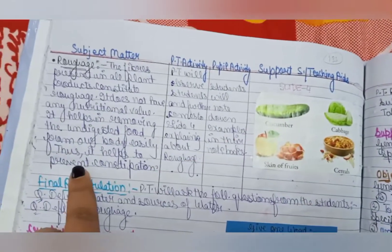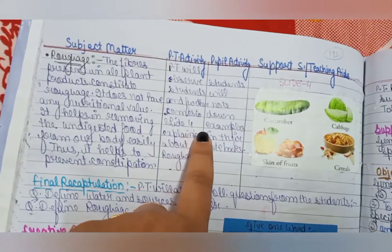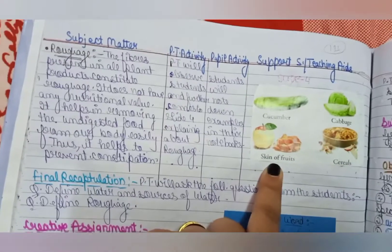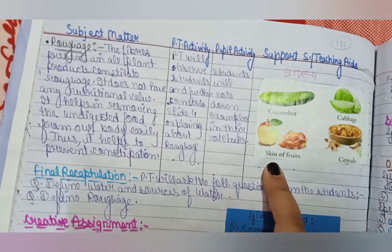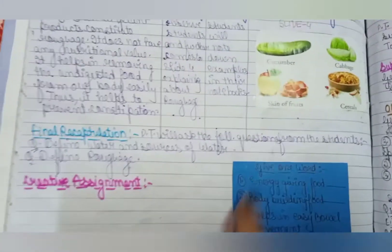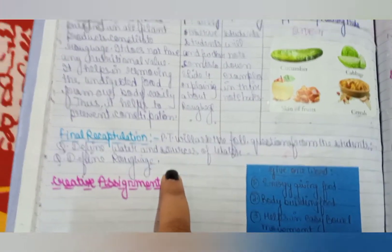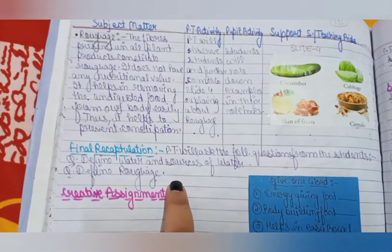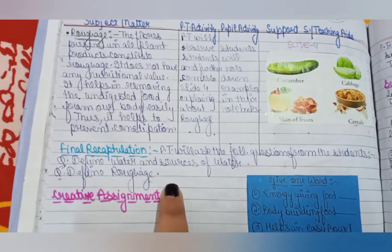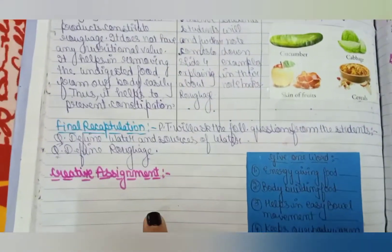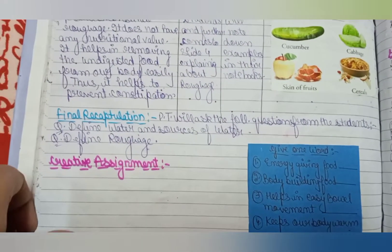The text will continue to be read. After reading the reference, we show reference slide 4. Then we have a final recap, where a related question is asked. Then there is a creative assignment given to the child.